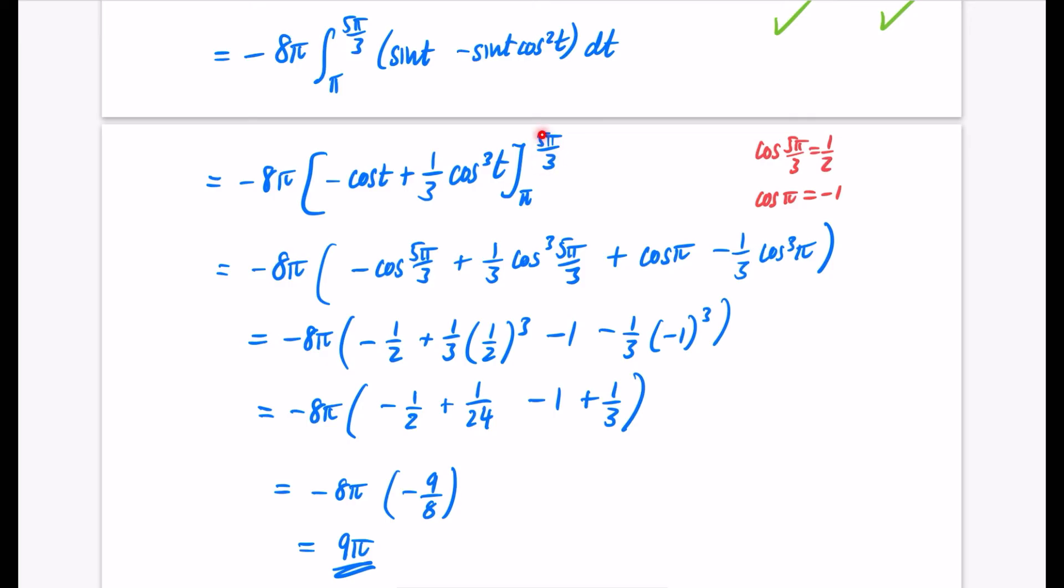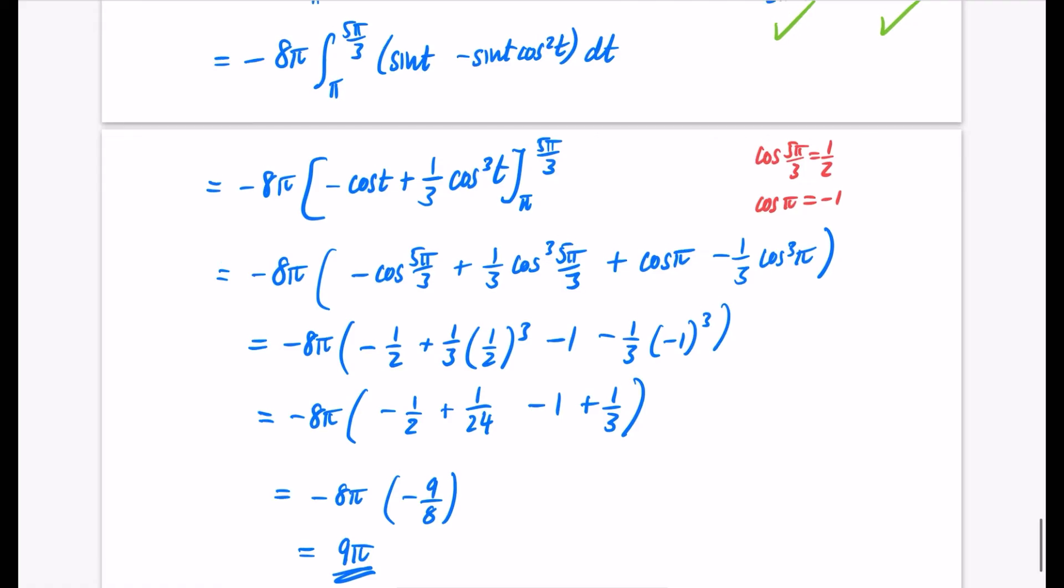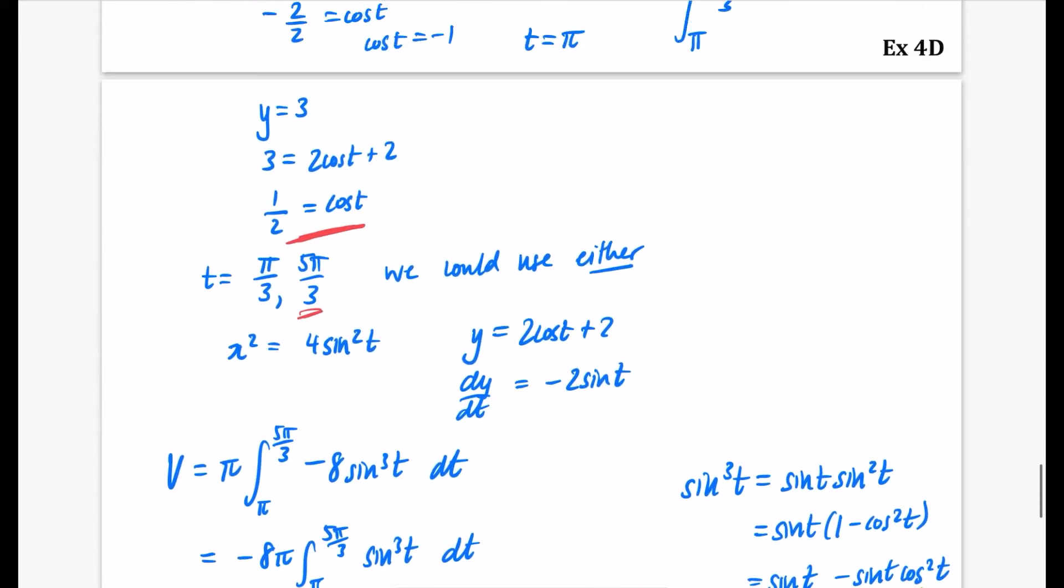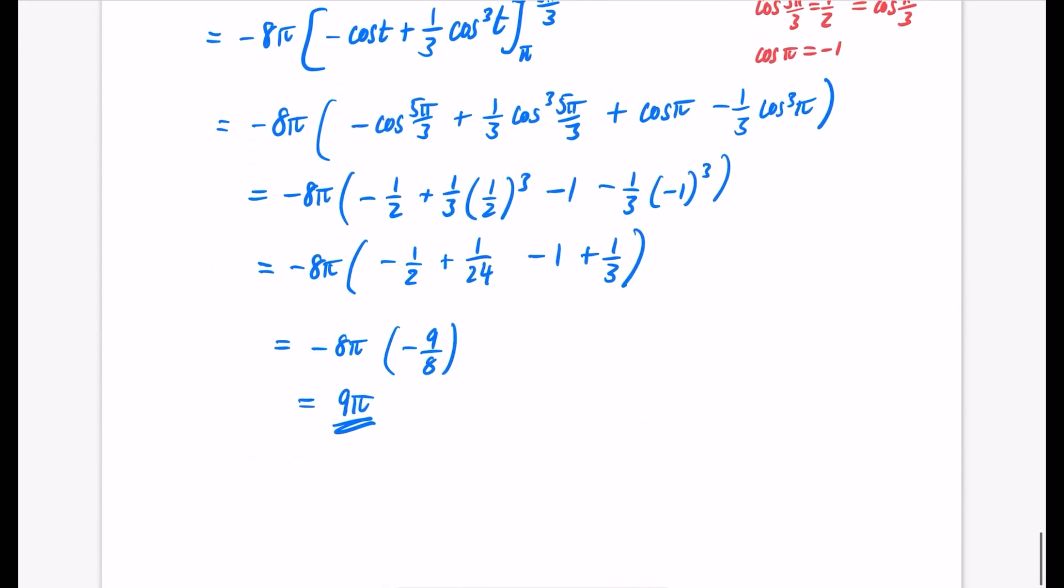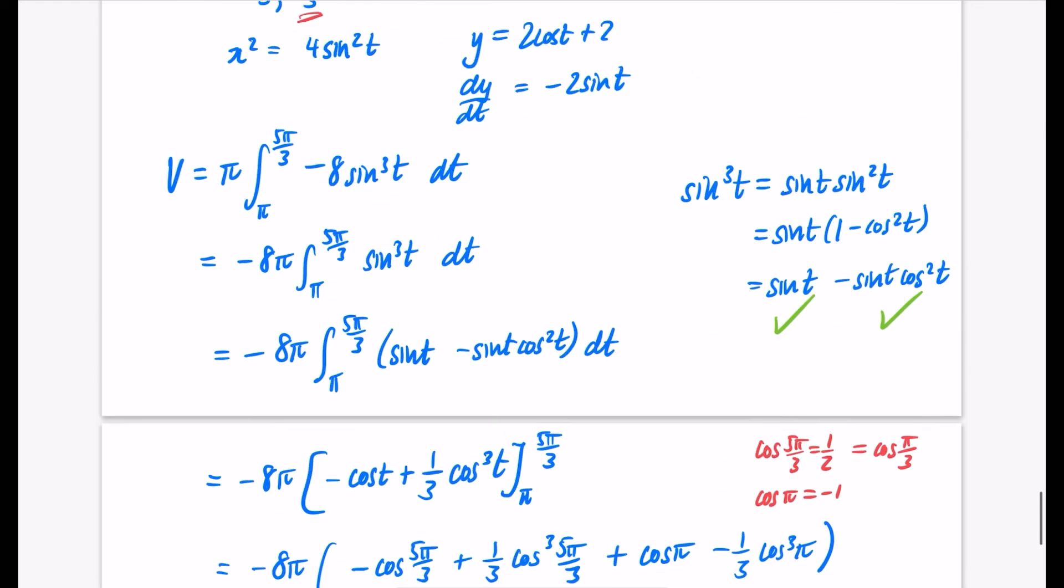Now if we did do it with the π/3 on the top, you can see what would have happened. Because it would have made no difference. Because this is the same as the cos of π/3. So when we would have been subbing in π/3 and π/3 here, we still would have had the 1/2 and the 1/2. So it would have been perfectly fine.